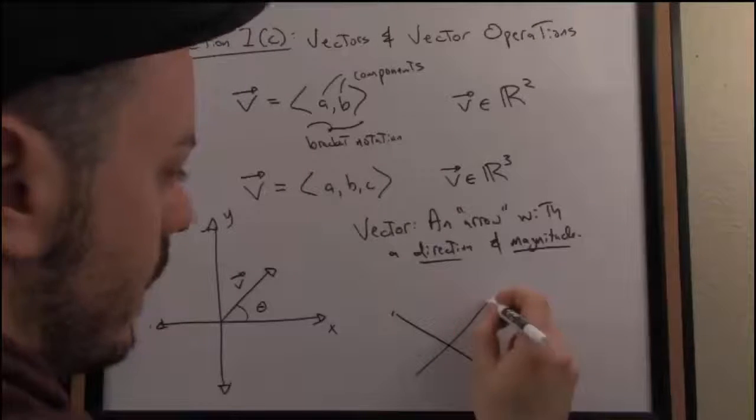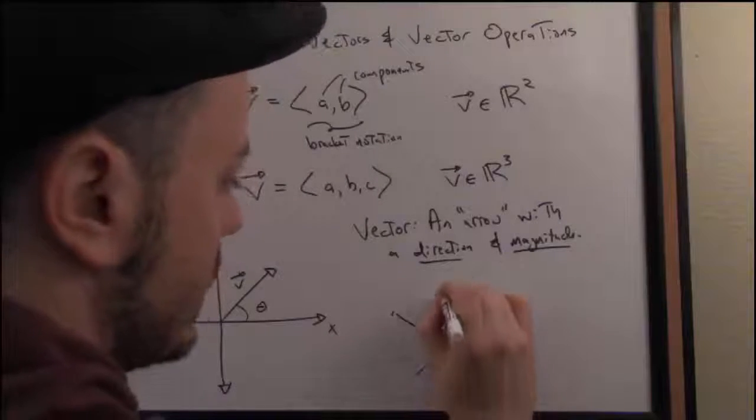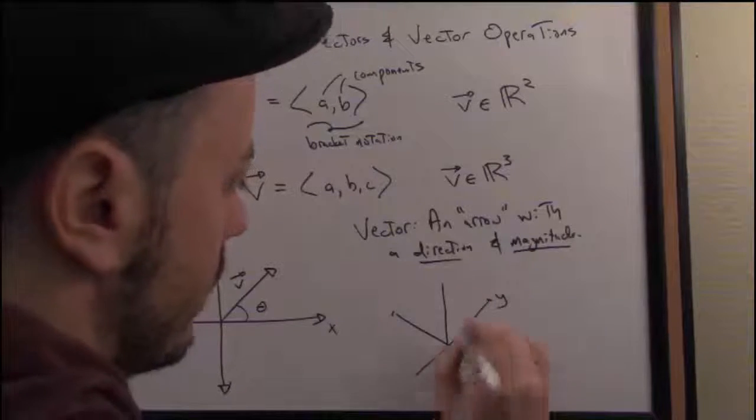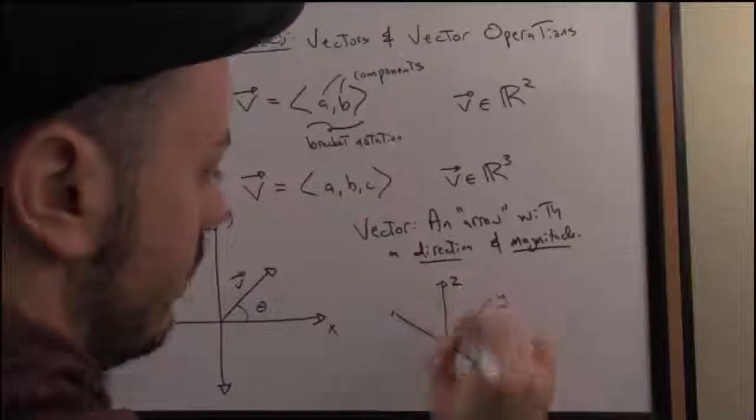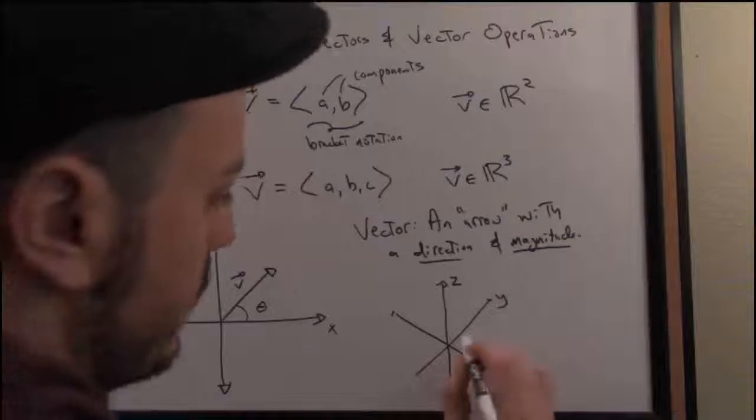So what would this look like in 3-space? Well, we just kind of extend things in an intuitive way geometrically. So I have an x-axis and a y-axis. I need 3 axes, of course, here to define 3-space. This would be just an image of R³.